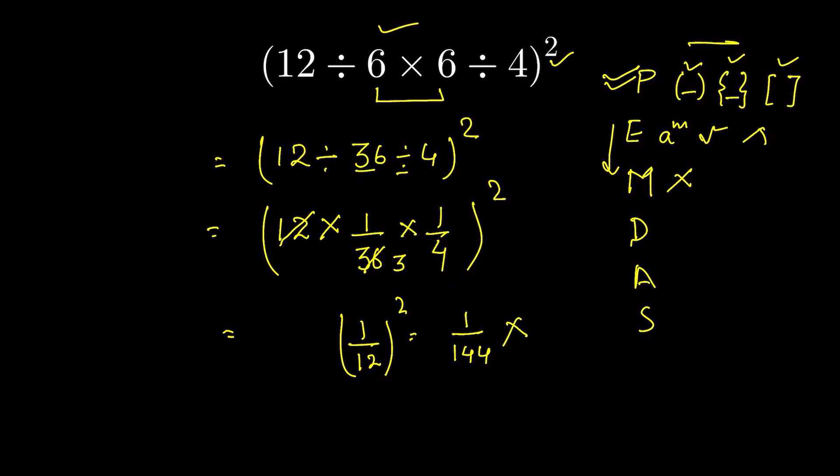Is 1/144 the right answer? No, it is not the right answer. Why? Because multiplication and division — we cannot give priority to multiplication over division, because they have equal priority. They are reciprocal actions.